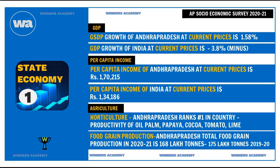Agriculture is one of the important aspects of Andhra Pradesh's state economy. Among the three sectors contributing to GSDP, the primary sector includes agriculture and horticulture. Andhra Pradesh ranks number one in the country in the productivity of oil palm, papaya, cocoa, tomato, and lime. Regarding food grain production — AP is called the rice bowl of India — total food grain production in 2020-2021 is 168 lakh tons, down from 175 lakh tons in 2019-2020, possibly due to COVID.